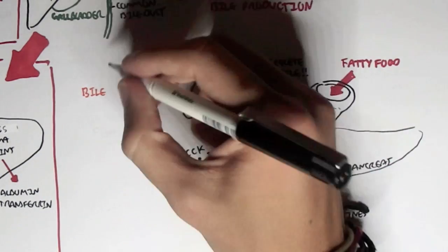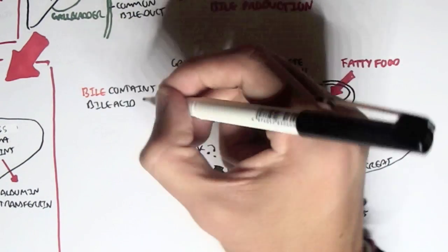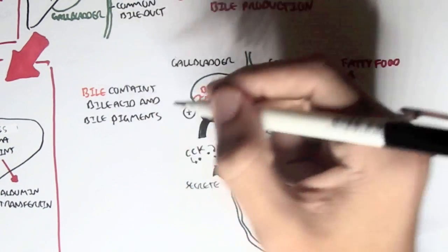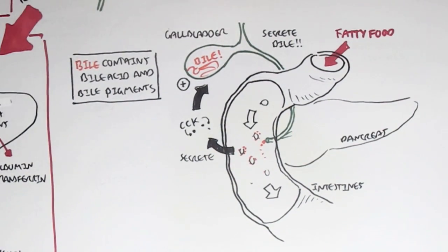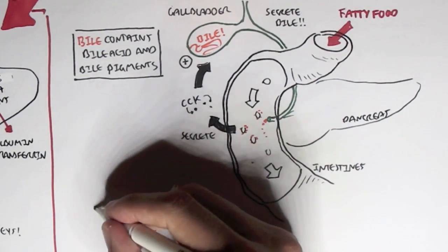Bile is made up of two main things. It's made up of bile acids or salts, and also bile pigments. Let's firstly look at bile acids.